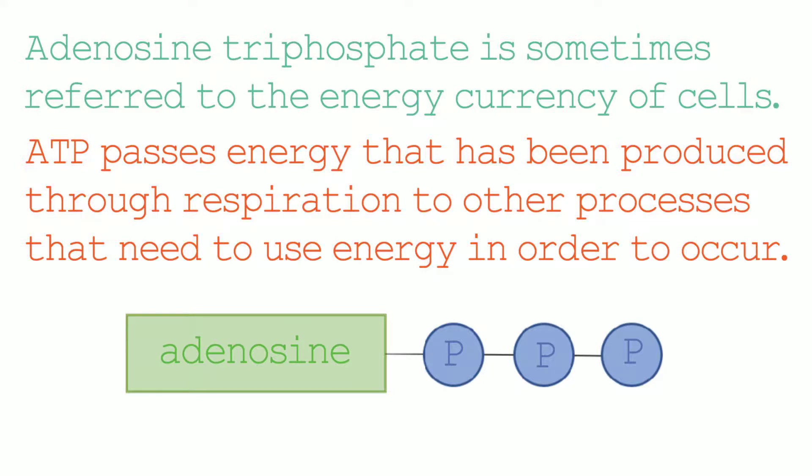For example, triangle means a three-sided shape, tricycle means three wheels on a bike. So triphosphate means that there's going to be three phosphate molecules in ATP.